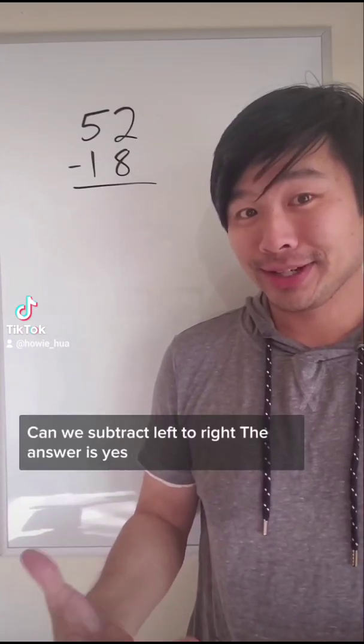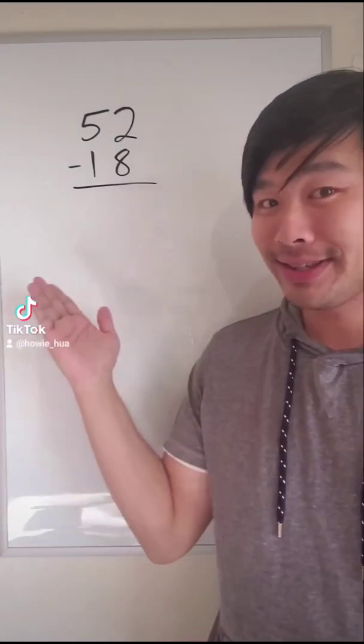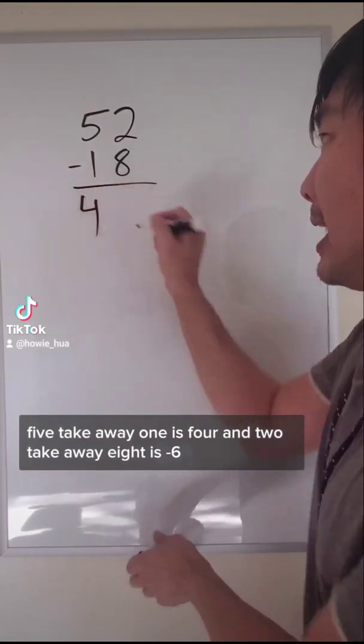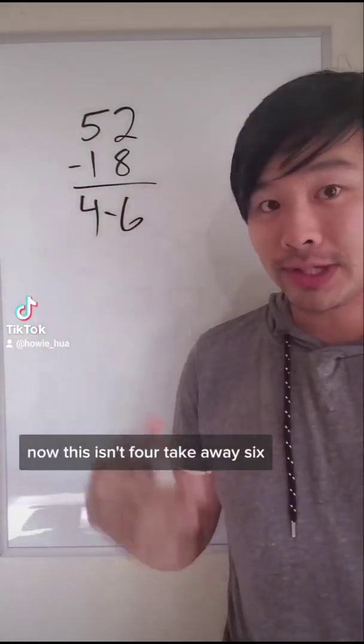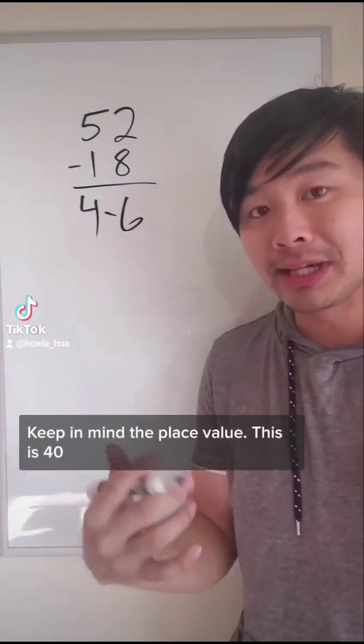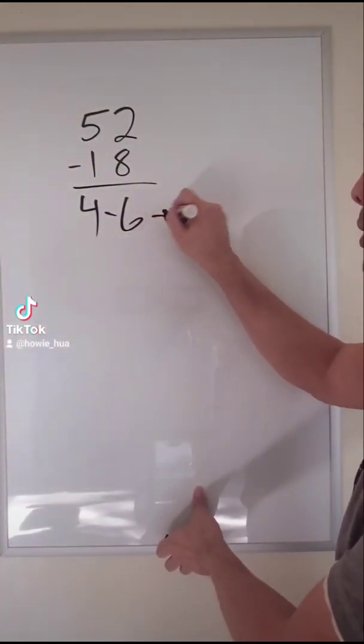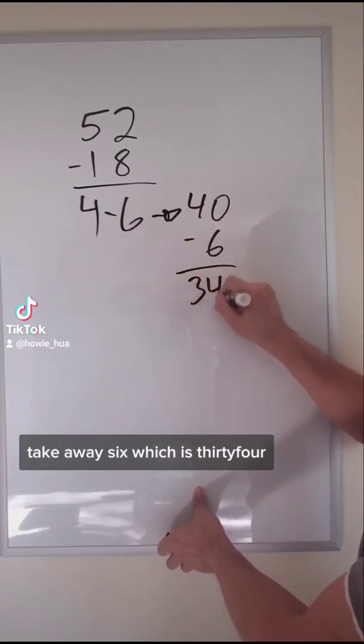Can we subtract left to right? The answer is yes. Let's take a look. Five take away one is four and two take away eight is negative six. Now this isn't four take away six. Keep in mind the place value. This is 40 take away six, which is 34.